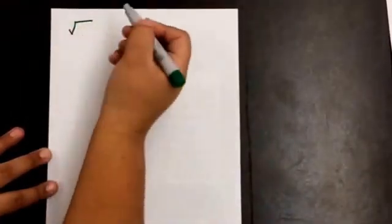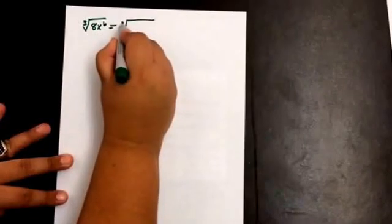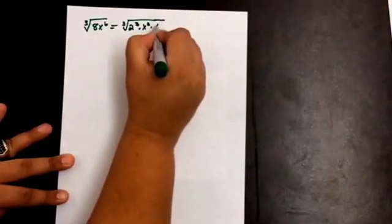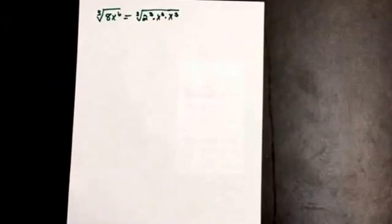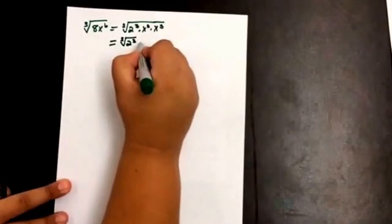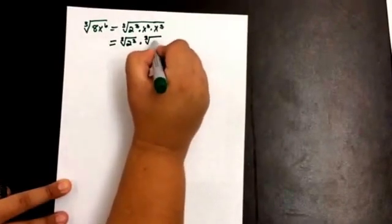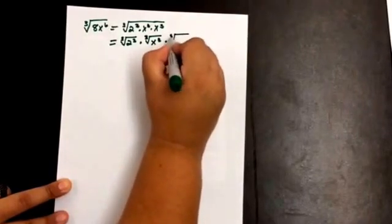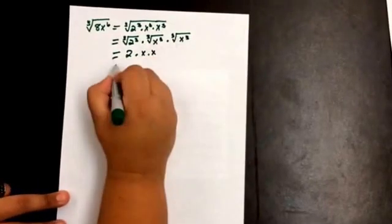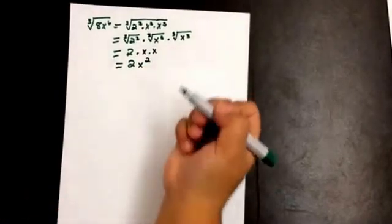Now let's try an example with variables. What if we have the cube root of 8x to the sixth? We can rewrite this as the cube root of 2 cubed times x cubed times x cubed. Taking the cube root of each factor gives us 2 times x times x, which equals 2x squared. And that's your answer.